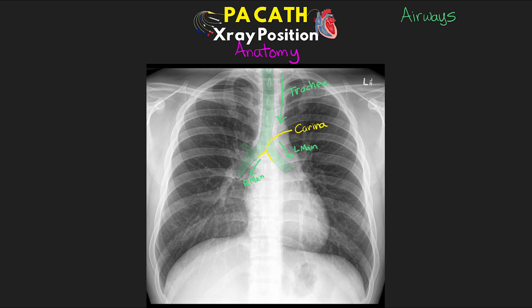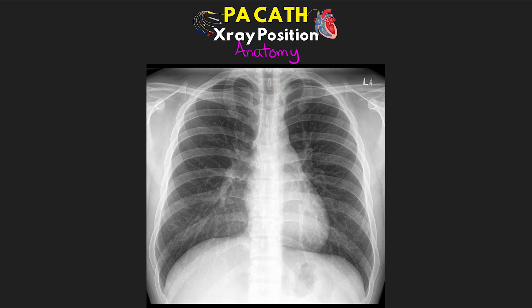This is why endotracheal tubes that are inserted too far often end up in the right main stem, as well as why most aspiration pneumonia happens in the right lung. Almost immediately after branching into the right main stem, we have the first branch going to the right upper lobe bronchus. Continuing along the right, we go into the bronchus intermedius, which later branches into the middle lobe and lower lobe bronchus, typically not seen on a chest radiograph. For the left main stem, it eventually branches but again isn't typically seen on x-ray.